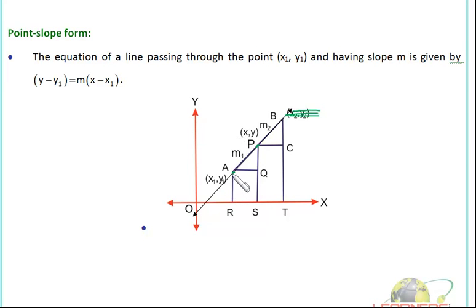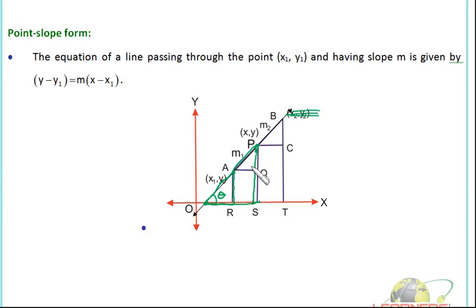This line is passing through (X1, Y1) and making a slope — the slope is actually tan theta, so I assume this angle to be theta. We take this triangle. This triangle is similar to the other triangle because this line is parallel to this line. If this angle is theta, this will also be theta. Taking this triangle, the slope M = tan theta = perpendicular by base.